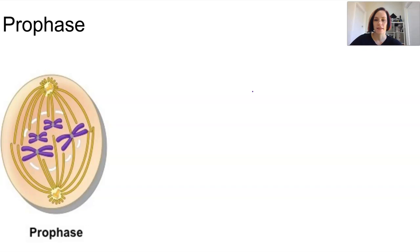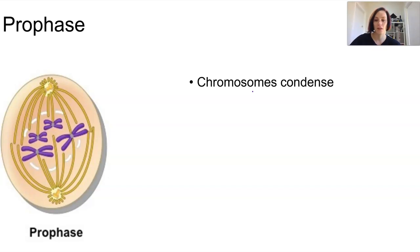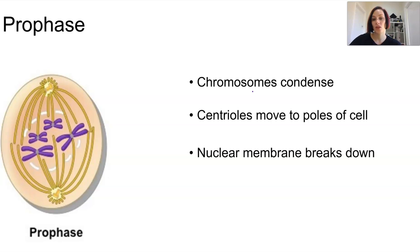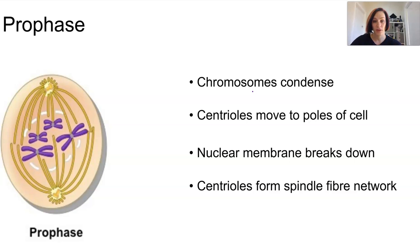In prophase, the chromosomes in the nucleus condense down to become really short and thick, so they become visible under the microscope. The two chromatids are clearly visible and can be seen held together at the centromere. Centrioles, which are organelles in the cytoplasm, move to the poles at either end of the cell. The nuclear membrane starts to break down, and the centrioles then form a network of spindle fibers that extend out to grab at the chromosomes in the middle.